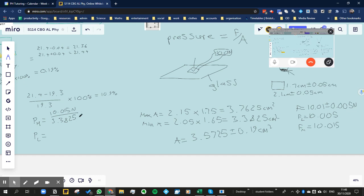And the lowest pressure is going to be the lowest force, 10.005 newtons, divided by the highest area, 3.7625 centimeters squared.